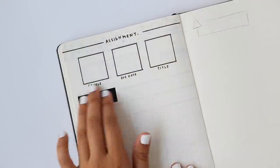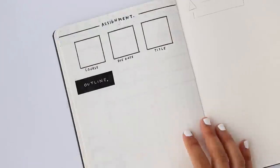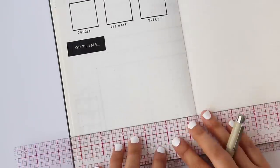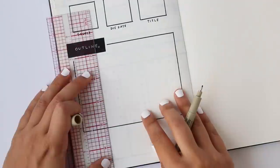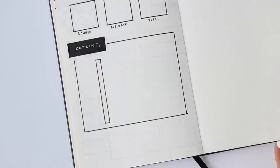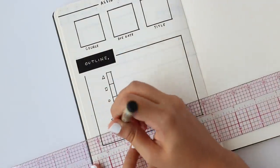Assignments, essay outlines, whatever big projects that you have. At the top there's a section to write down the course, the due date, and the title of an assignment, and below that is where you can plan out what tasks that you need to have completed and give yourself some fake due dates to keep you on track for getting that assignment in on time.